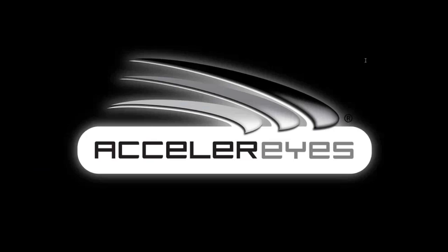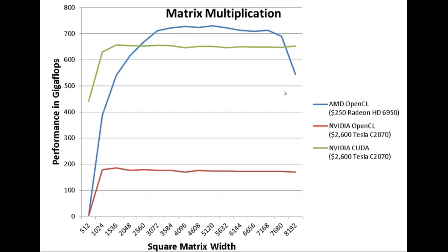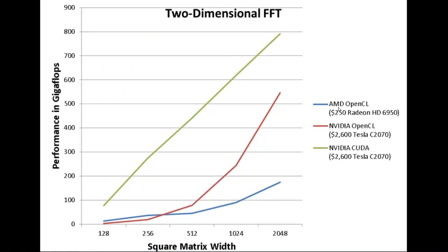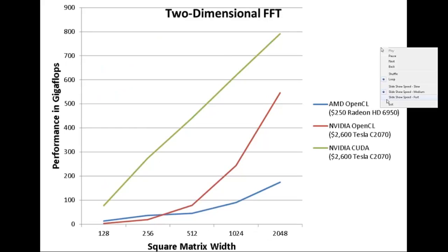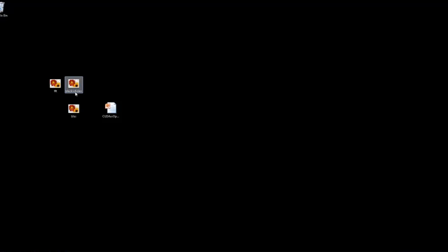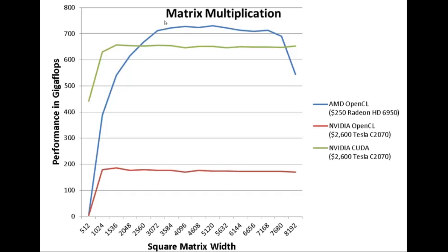This concludes the slide portion of the presentation. We will now show benchmarks of OpenCL versus CUDA in ArrayFire, with a particular focus on the raw math libraries. In the matrix multiplication benchmark, the AMD GPU purchased for $250 outperforms the NVIDIA Tesla GPU costing around $2,600. The OpenCL library is not fully utilizing the complete capabilities of the NVIDIA Tesla, but from a price-to-performance point of view, the OpenCL AMD card beats the NVIDIA GPU.